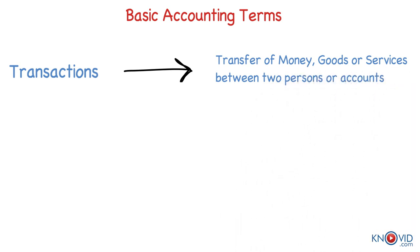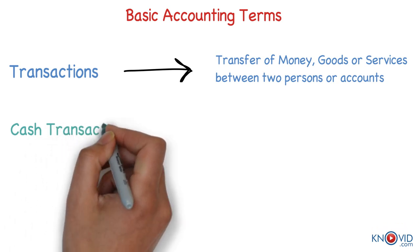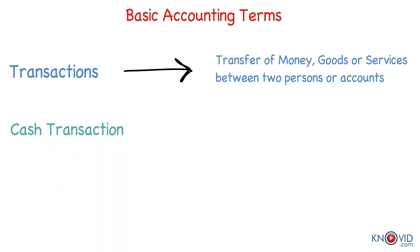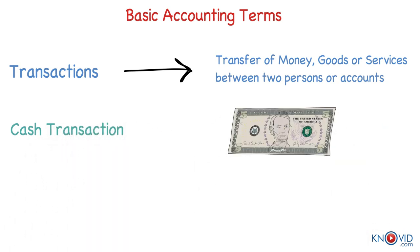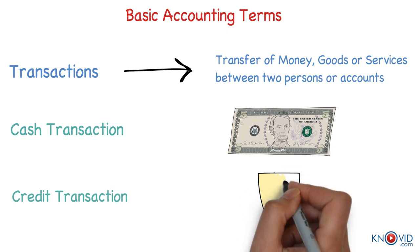Transactions can be: 1. Cash transaction where cash receipt or payment is involved in the transaction. 2. Credit transaction is one where cash is not involved immediately but will be paid or received later.